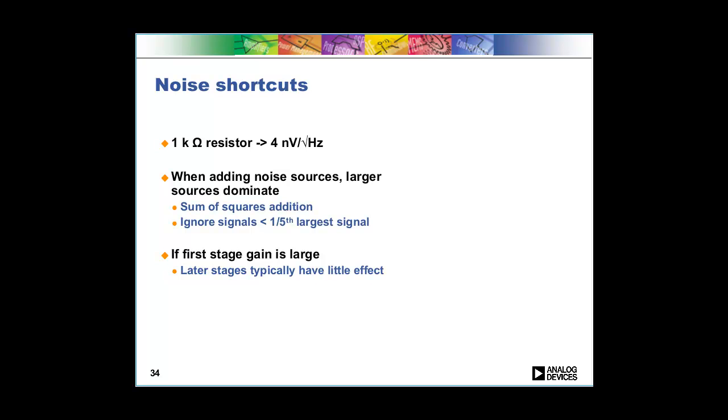This comes from the sum of squares addition. If you've got a noise signal that's less than one-fifth you can basically ignore it, because if you've got two noise signals and one is one-fifth of the other, because of the sum of squares it will actually end up—the contribution will be one twenty-fifth. So because of the squaring property, quickly the smaller signal falls away.